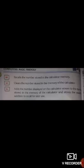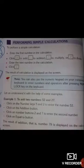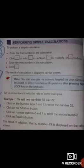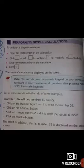Next is performing simple calculations. To perform a simple calculation, enter the first number, then click plus, subtract, or whichever operation you want to perform. Then enter the second number and click the equals button. Note: you can also use the numeric keypad on your computer keyboard to enter numbers and operations after pressing the Num Lock key.